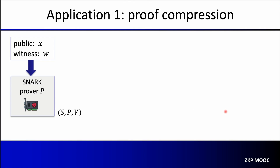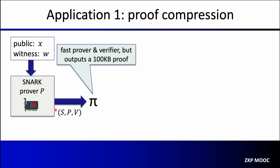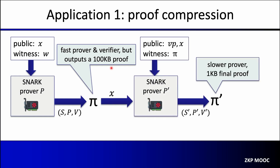The first application of recursion is to build a system with a fast prover where the resulting proof is also short. Let's assume the inner proof system SPV has a fast prover but results in a large proof — say 100 kilobytes. What we'd like to do is compress this proof to something much shorter by running the outer system, which may have a slower prover but results in a shorter proof — say only a kilobyte long.